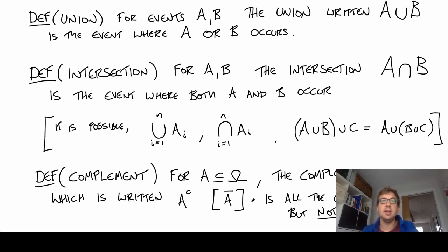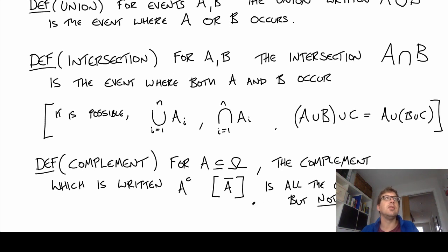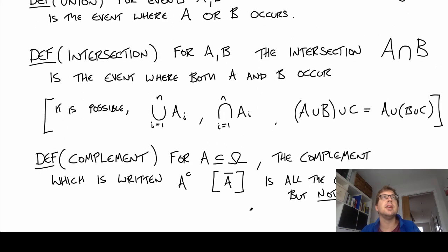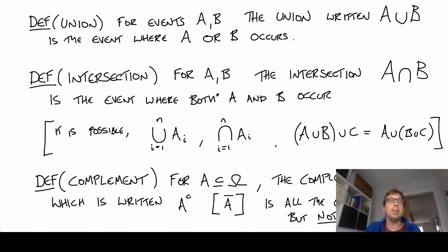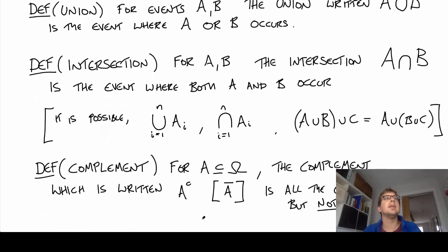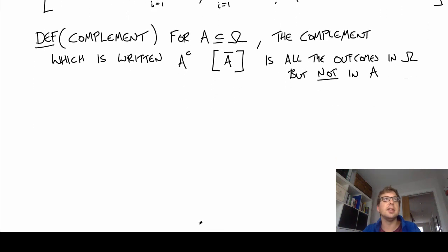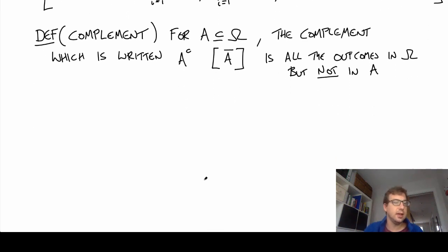To picture these operations, it's useful to draw a Venn diagram, which we'll cover briefly. These three — union, intersection, and complement — are the basic building blocks for constructing different sorts of sets. There's more to say, but let me also mention one more operation that's sometimes useful.